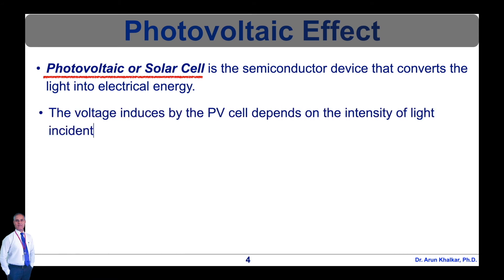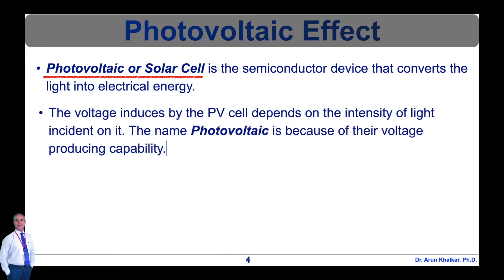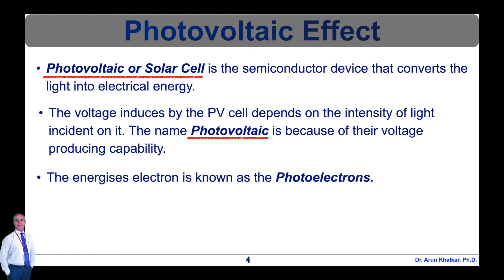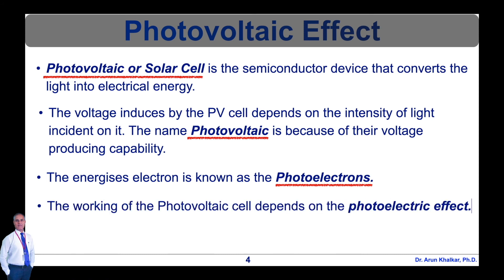The electrons of the semiconductor material are joined together by covalent bonds. The electromagnetic radiations are made of small energy particles called photons. When the photons are incident on the semiconductor material, the electrons become energized and start emitting. The energized electrons are known as photoelectrons and the phenomenon of emission of electrons is known as the photoelectric effect.